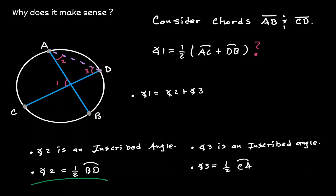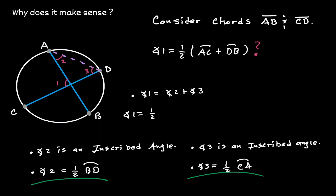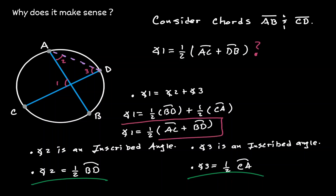Now we know the measurement of angle 2 and angle 3 each in terms of an arc. Combining those with the relationship that angle 1 equals angle 2 plus angle 3, we substitute each angle's arc expression. Factoring out the one-half gives us our result — which is exactly what we wanted to show.